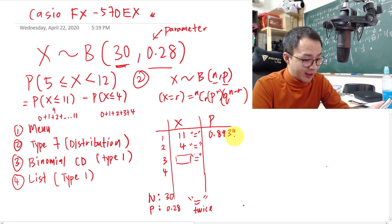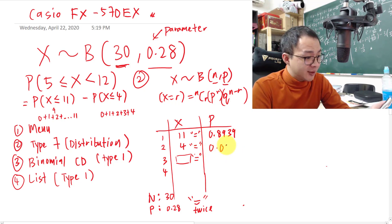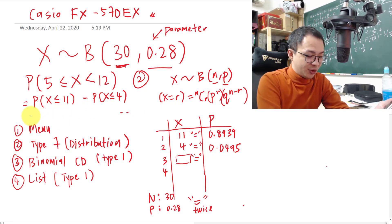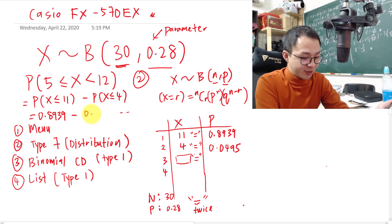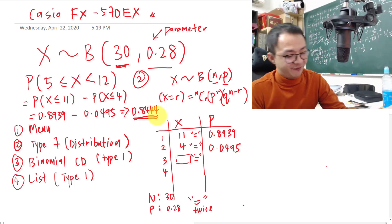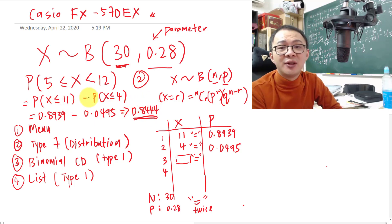The calculator gives P(X ≤ 11) = 0.8939 and P(X ≤ 4) = 0.0495. Subtracting: 0.8939 − 0.0495 = 0.844. This is the final answer, representing P(5 ≤ X ≤ 11).